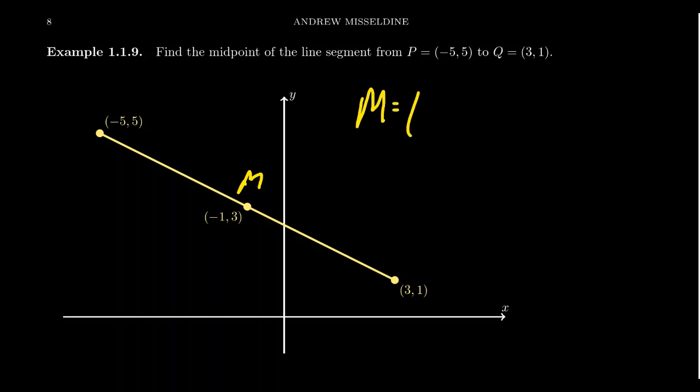Well, the midpoint M will have the average of the X-coordinates, negative 5 plus 3 over 2. Because we're adding them, it doesn't matter who's the first point, who's the second coordinate. We're just averaging the X-coordinate. We have to also average the Y-coordinate.